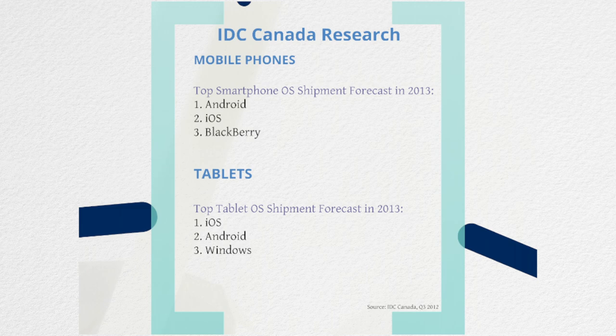On the tablet side from an OS perspective, it's a little bit different. iOS leads in terms of shipments and usage, Android comes in at number two, and Windows at number three. From a geographical perspective, it's really important to look at geographical differences. If you were to look at those top three smartphone operating systems in other regions, you'd see BlackBerry's not in there — probably not surprising to anyone. In Canada, things are a little bit different.